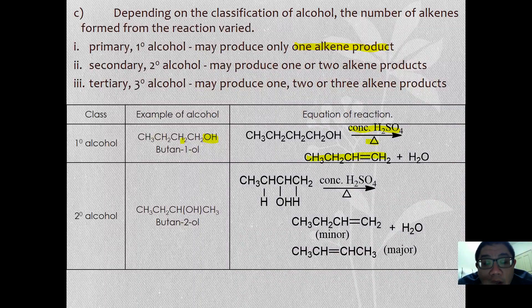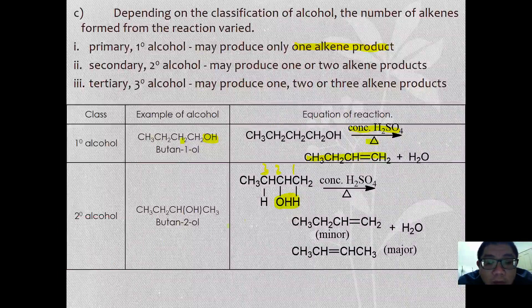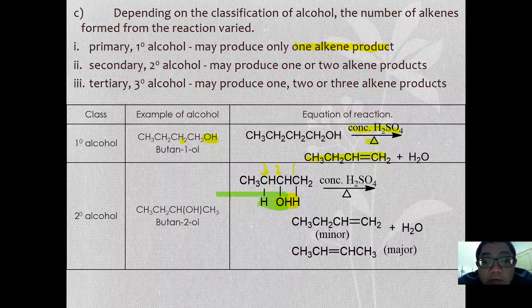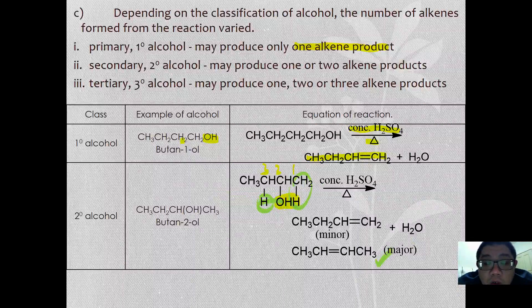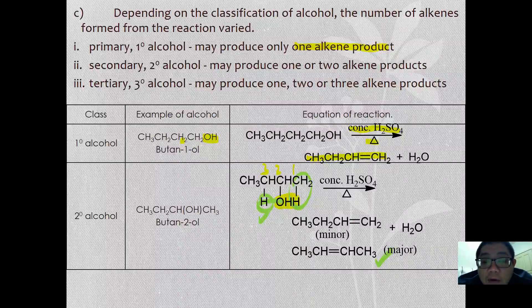However, for butan-2-ol, there are two ways to remove. Either you remove between C1 and C2, or alternatively between C2 and C3. Removal of hydrogen from C3 and OH from C2 is more favorable because C3 has fewer hydrogens while C1 has more. Following Zaitsev's rule, the hydrogen from the third carbon is more readily removed. Therefore, you form but-2-ene as the major product and but-1-ene as the minor product.